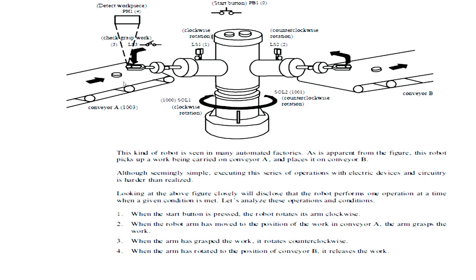Until it reaches to the position of the conveyor B. When arm has rotated to the position of conveyor B, it will release its work in conveyor B.